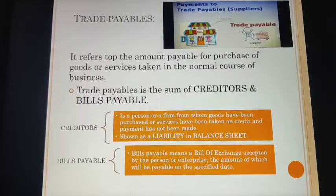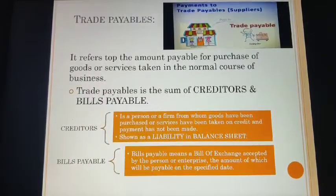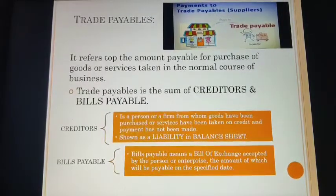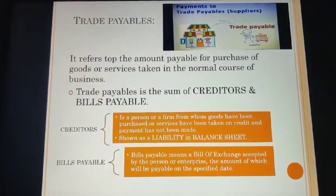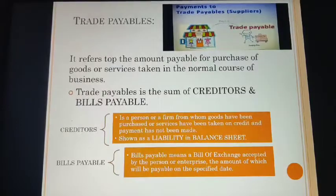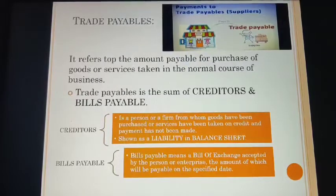Trade payables is exactly the opposite of trade receivables. There it was an amount receivable, however here it is an amount payable. There it was the sum of debtors and bills receivable; here you have the sum of creditors and bills payable. Now what are creditors and bills payable?